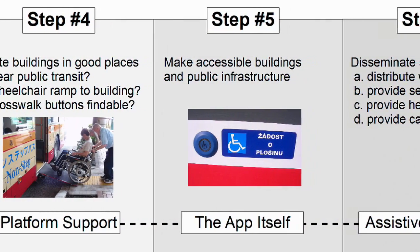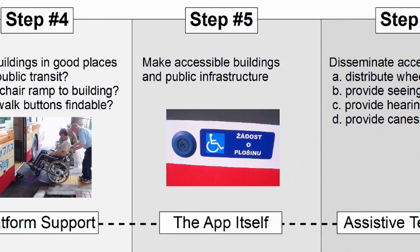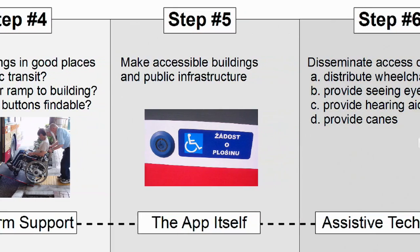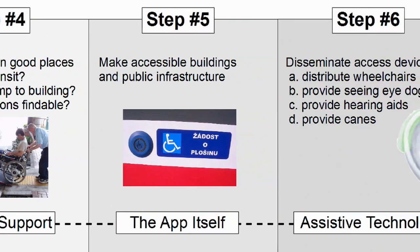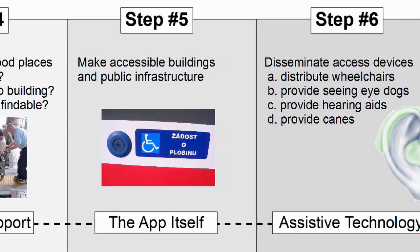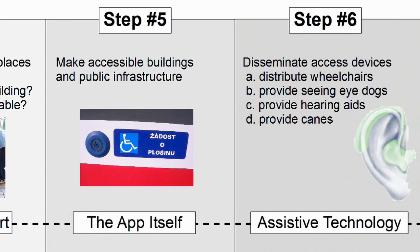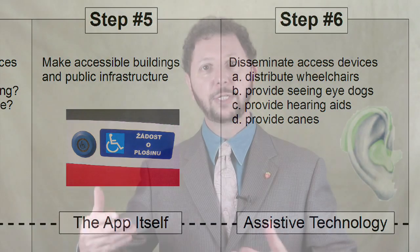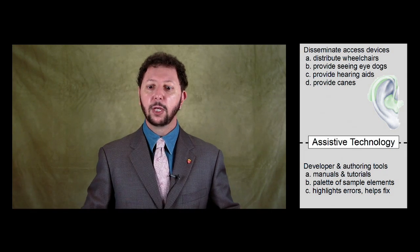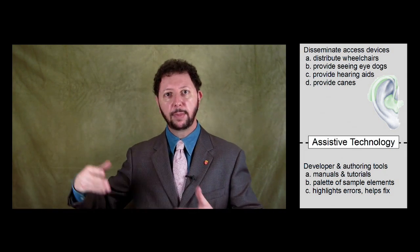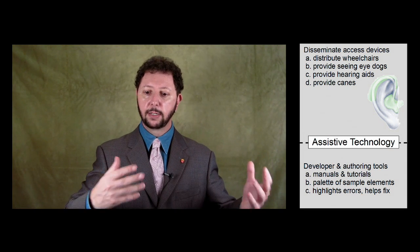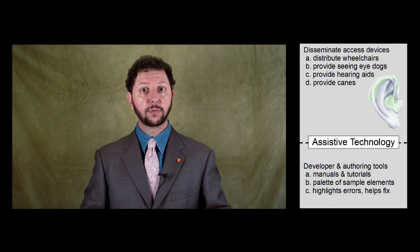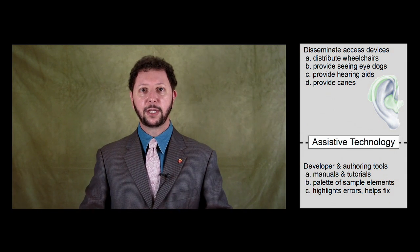The fifth use step is that we need the accessible buildings to be built and the accessible applications to be built. The sixth and final step is disseminating the devices that people with disabilities use when interacting with public spaces. Wheelchair ramps are of little use unless people have wheelchairs. So we need to disseminate wheelchairs, hearing aids, seeing-eye dogs for the blind, canes for the blind, and train users in their use.